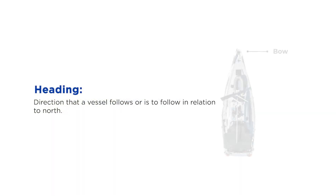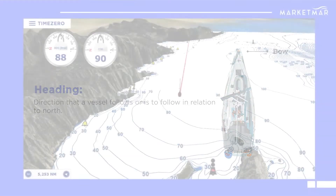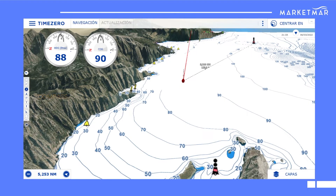We will start with the simplest one: the heading. The heading tells us where the bow of the vessel is pointing in relation to north. In this way, we will be able to determine if our vessel is following the desired course and be able to reach our destination.